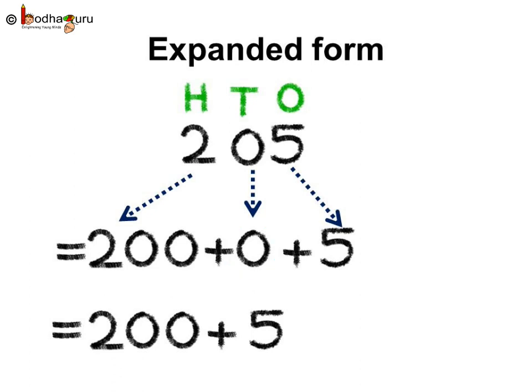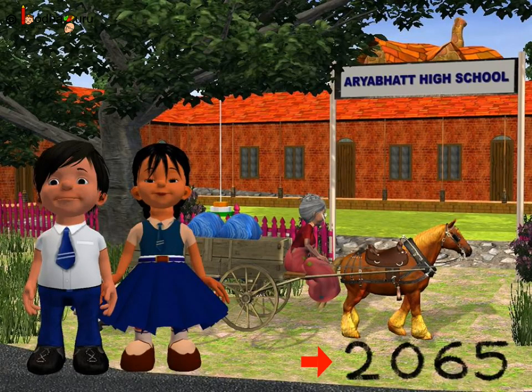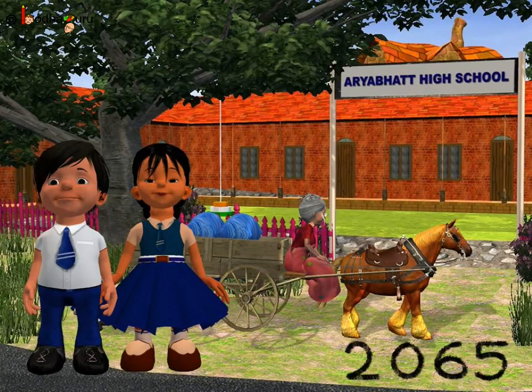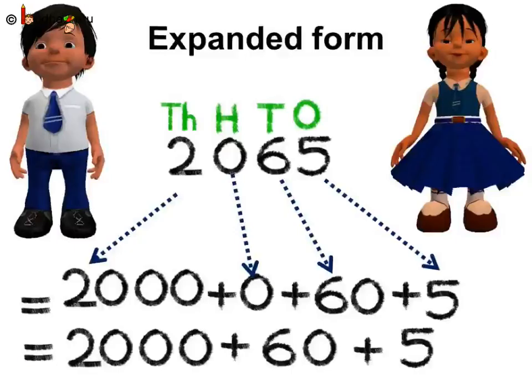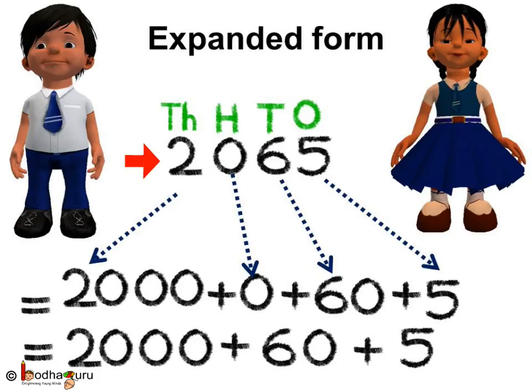There are 2065 students in the school. How do we write in expanded form? Let us write the number with the digits under the correct place value. So, 2065 is equal to 2000...